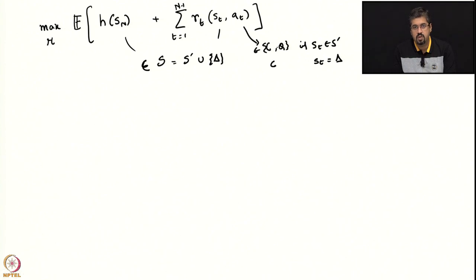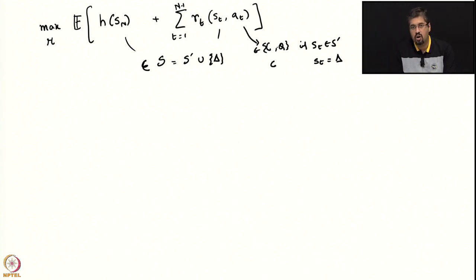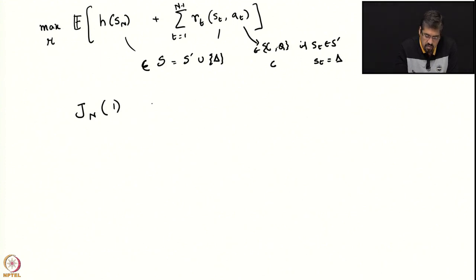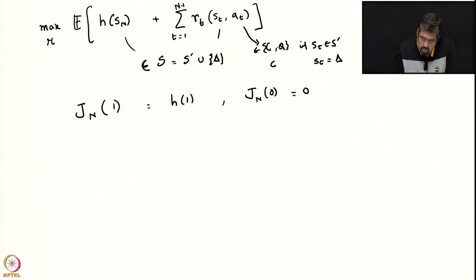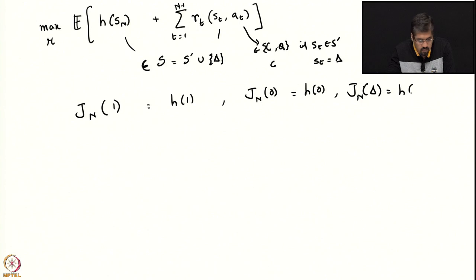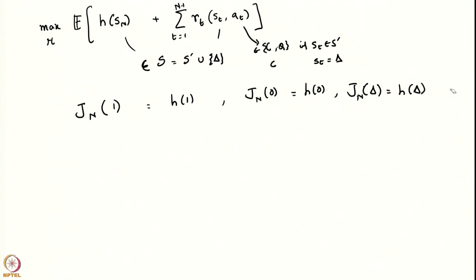We will now apply dynamic programming to this problem. For that, we define the value function or the cost-to-go. Let us define J_n: J_n of 1 equals H of 1, J_n of 0 equals H of 0, and J_n of delta equals H of 0, which equals 0. Consequently, since H of 1 was 1, J_n of 1 equals 1, and J_n of 0 equals J_n of delta equals 0.